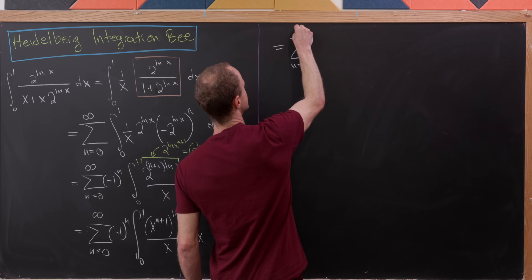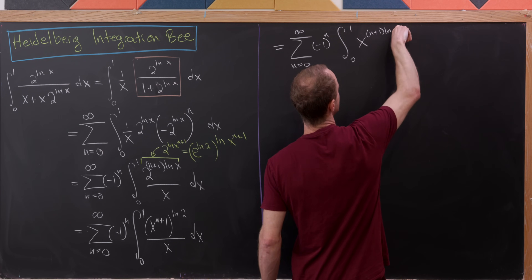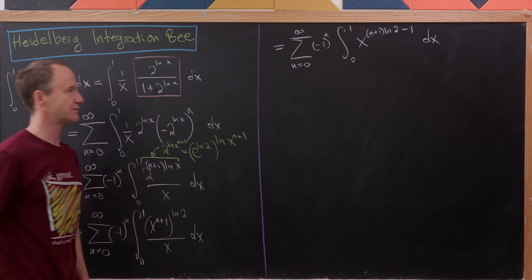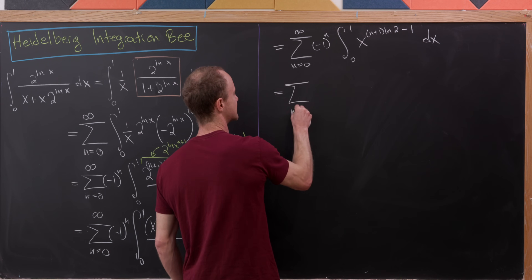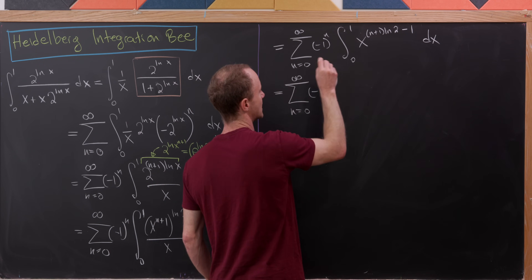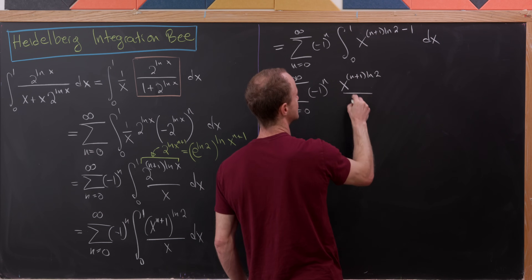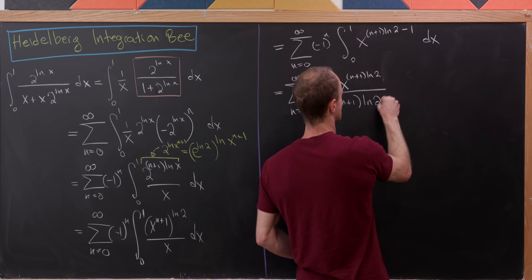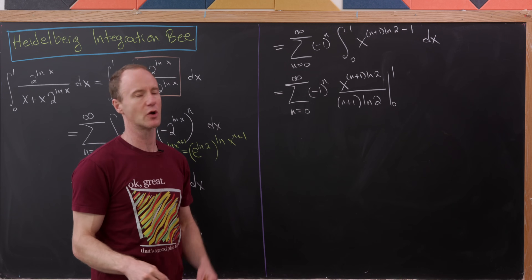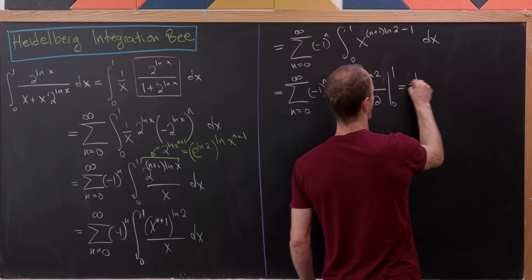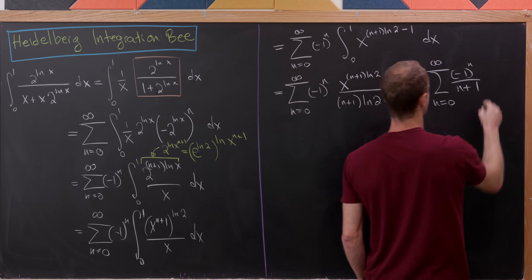We've got our sum as n goes from 0 to infinity of minus 1 to the n, and the integral from 0 to 1 of x to the n plus 1 times the natural log of 2, minus 1, dx. Applying the power rule for integration, that leaves us with the sum as n goes from 0 to infinity of minus 1 to the n, times x to the n plus 1 times natural log of 2, over n plus 1 times natural log of 2, evaluated from 0 to 1. Evaluating at 0 gives 0, evaluating at 1 puts 1 in the numerator, and we can factor out 1 over natural log of 2, leaving the sum of minus 1 to the n over n plus 1.